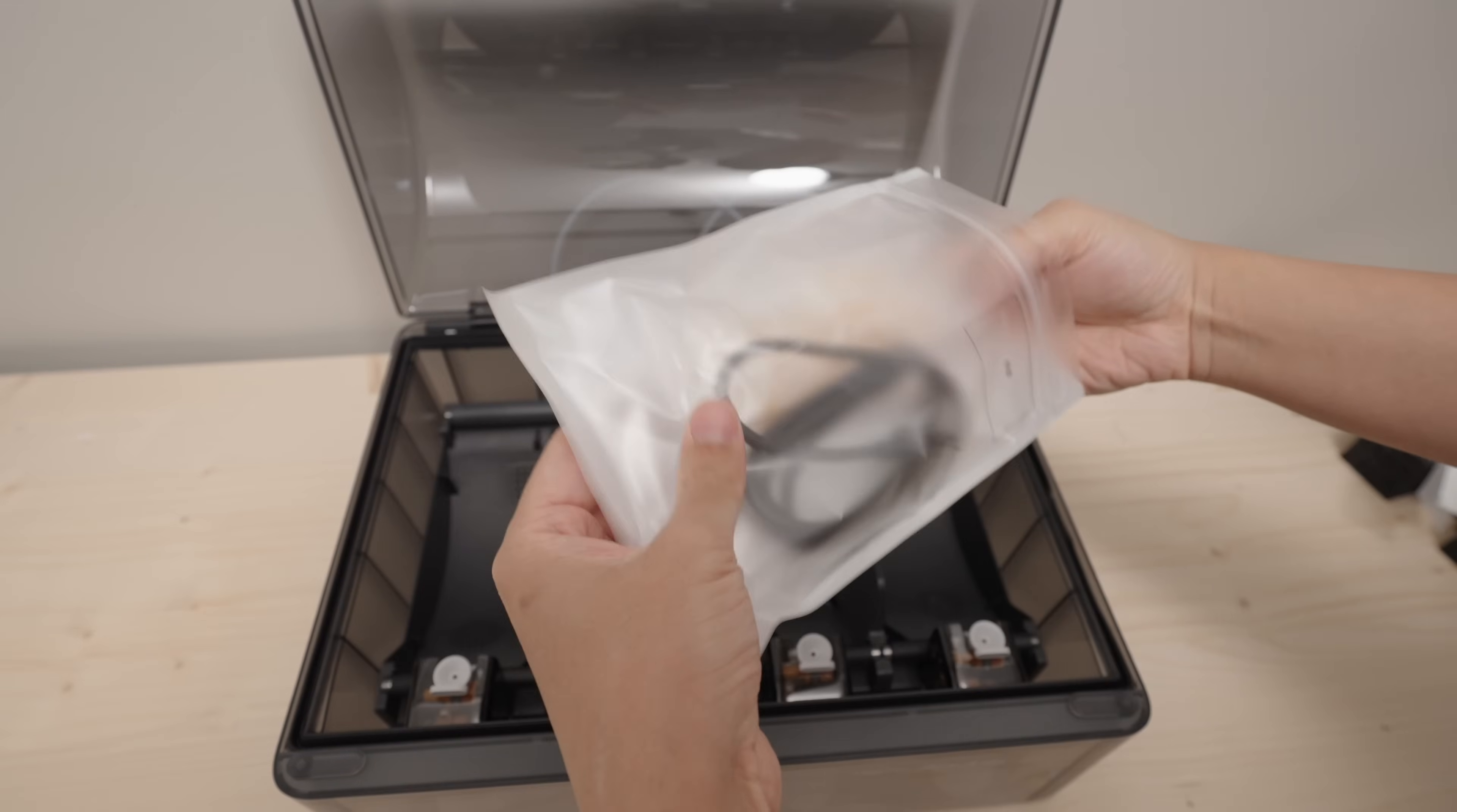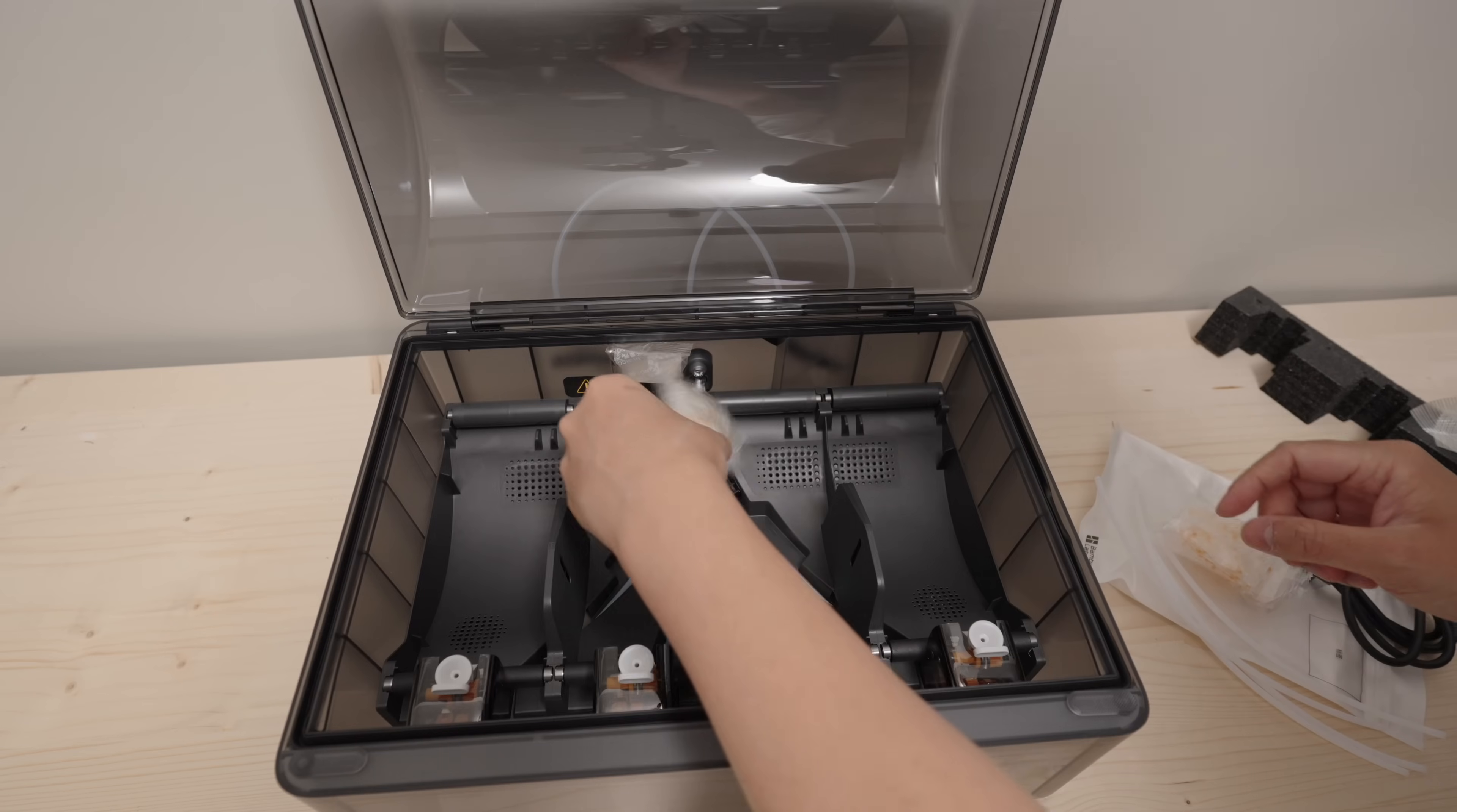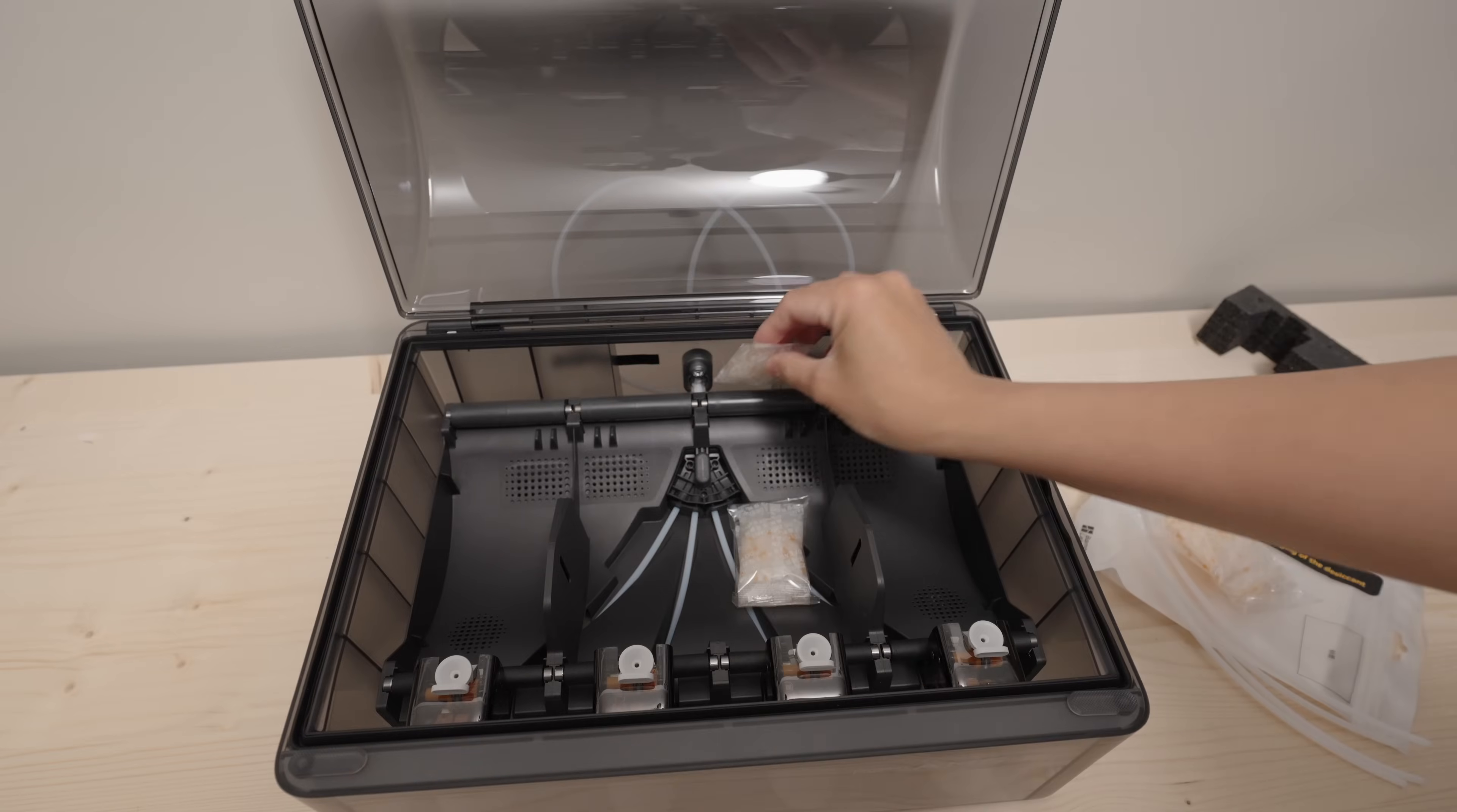In the AMS2 Pro itself, you'll find the replacement tubes, the 6-pin cable, and extra desiccant packs. You also want to unpack these plastic packs and place the desiccant packs back in the rear slots.